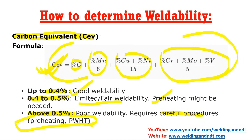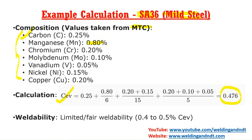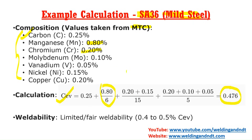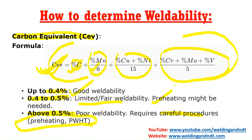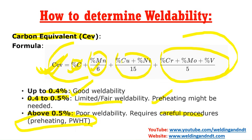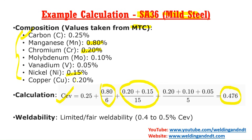Going to the formula: carbon is kept as-is, then manganese is 0.80 so we have 0.80 divided by 6. Next, copper is 0.20 and nickel is 0.15, so we have 0.20 plus 0.15 divided by 15. Finally, chromium is 0.20, molybdenum is 0.10, and vanadium is 0.05, so chromium plus molybdenum plus vanadium divided by 5.